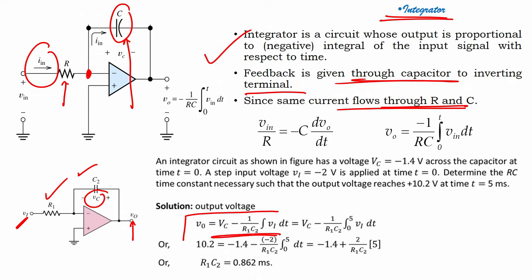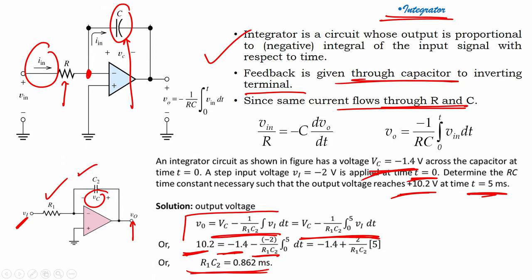Substituting values from t = 0 to t = 5 milliseconds, the output voltage Vo is 10.2 volts, equals −1.4 (which is Vc) minus (1/R1C2) ∫₀⁵ V1 dt. When I substitute all the values, I can find R1C2 to be 0.862 milliseconds. So 0.862 milliseconds is my RC time constant for this integrator circuit.